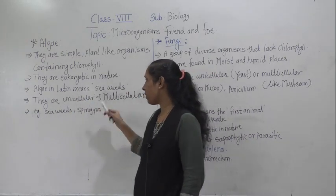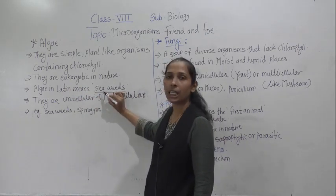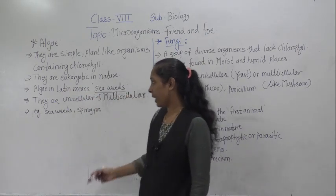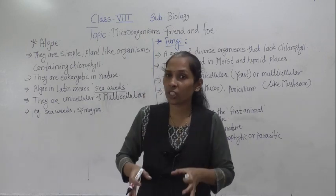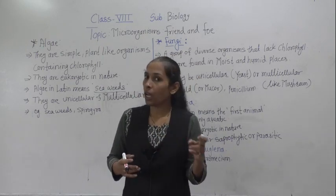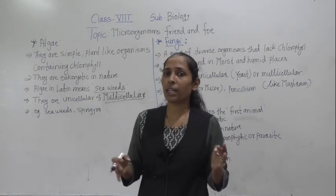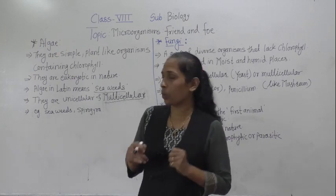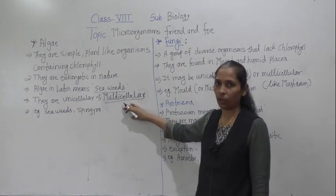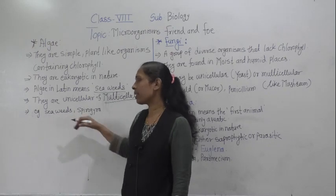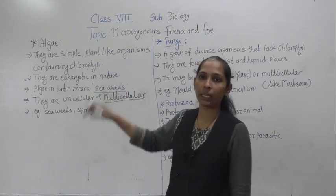The word algae in Latin means 'sea weeds.' Next, algae can be unicellular or multicellular. Some algae are unicellular — so tiny that we need a microscope to observe them. Others are multicellular and can be so long that their length can be measured in meters. Examples of algae are sea weeds and Spirogyra.